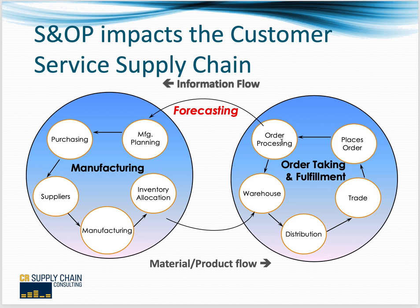With modern ERP systems, orders are validated because your system probably won't allow people to order things that aren't valid for the current time period. You also do a credit check — if the company owes you more than is viable, you'll hold their order until they make a payment. The order is then released to the warehouse. The warehouse picks the order, stages it, loads it into a truck, and distributes it directly to the stores or distribution center of your trade customer.